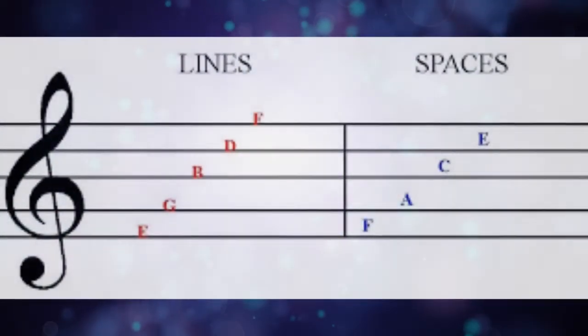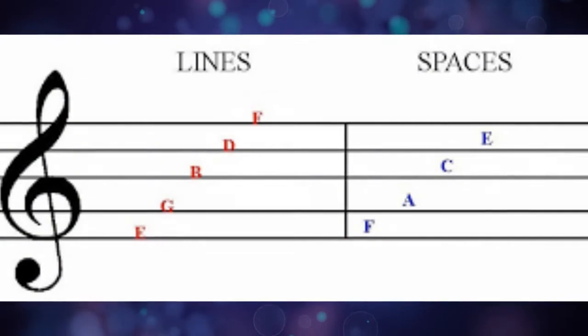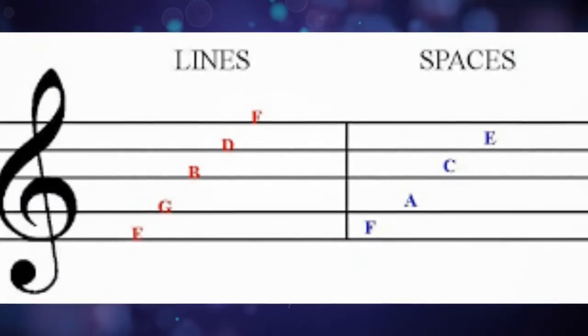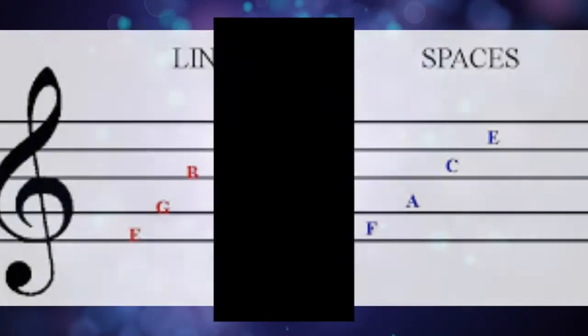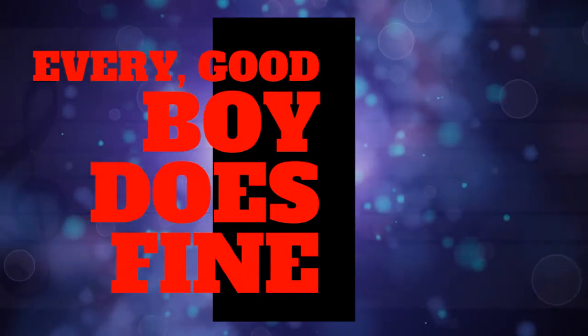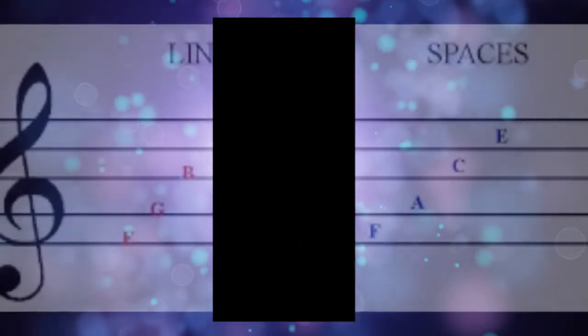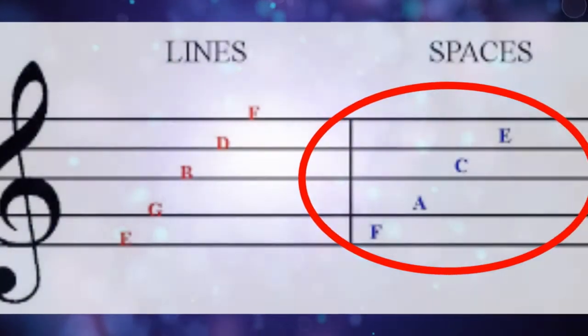The names of the notes on the lines from bottom to top are E, G, B, D, and F. We use the mnemonic device, every good boy does fine. The names of the notes in the spaces from bottom to top spell out the word face.